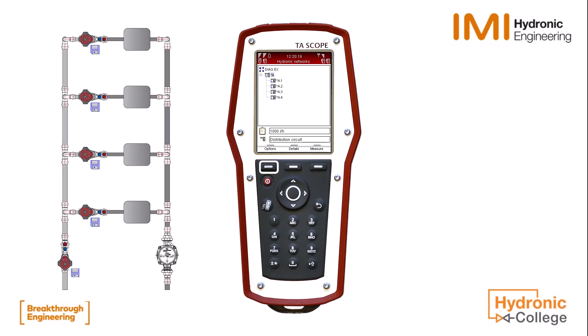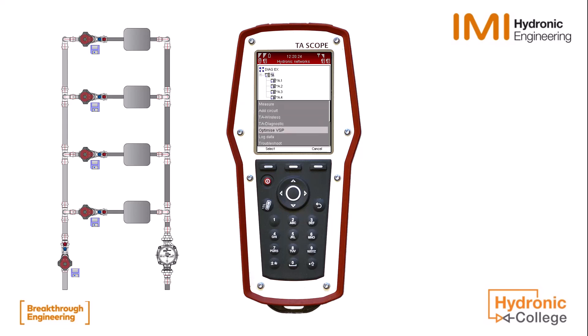Press Options and select Optimize VSP. TA Scope will now guide you through the VSP optimization process. Warnings are given to ensure the system has been balanced and that you are measuring on the main partner valve of the system. If you are happy that these steps have been taken, press Continue.